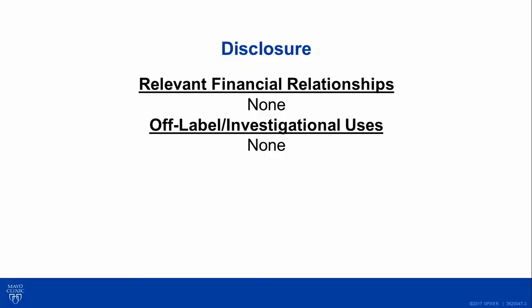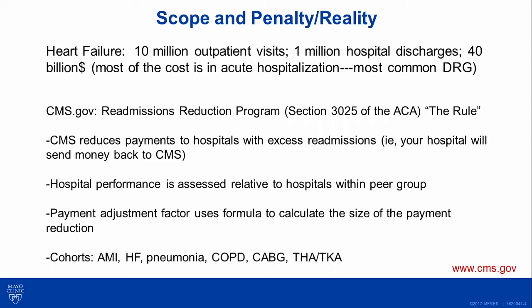I'll start with this because it's sort of the elephant in the room, and everyone who takes care of heart failure patients has heard a little bit about the CMS rules. Heart failure is the most common DRG, the most common discharge diagnosis. It is the costliest medical problem in the U.S. — $40 billion annually.